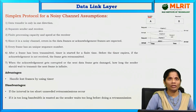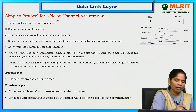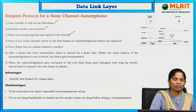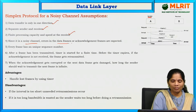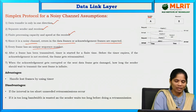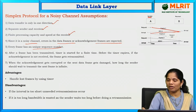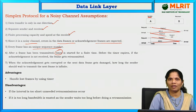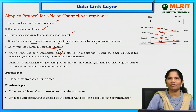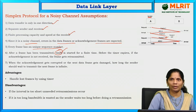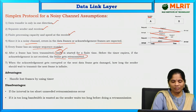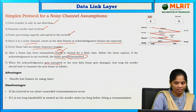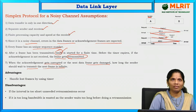The assumptions are: data is only one direction; separate sender and receiver; finite processing capacity and speed at the receiver; it is a noisy channel; data frames and acknowledgement frames are expected to have errors; every frame has a sequence number — frame 1, acknowledgement 1, frame 2, acknowledgement 2; after each frame the timer is started. If acknowledgement is not received within the timer period, the frame gets retransmitted.